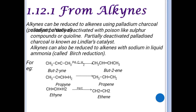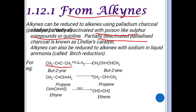The first preparatory method for alkenes is from alkynes — that is, from triple bond carbon compounds. When alkynes undergo reduction, they give alkenes. For the reduction, we use activated poisons like sulphur compounds or quinoline, or else partially deactivated palladized charcoal known as Lindlar's catalyst.